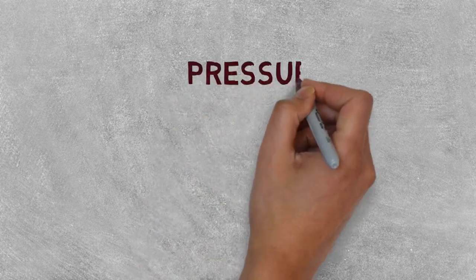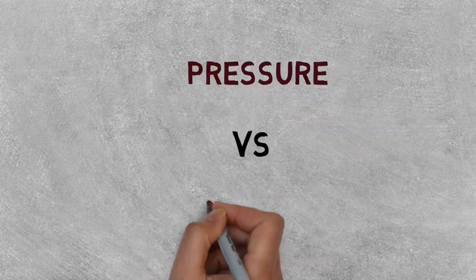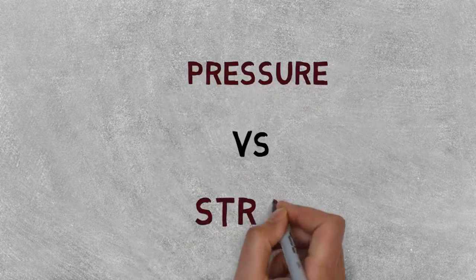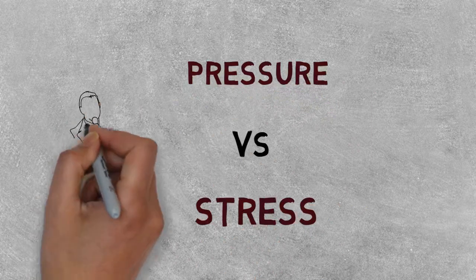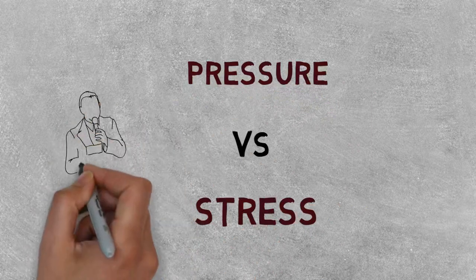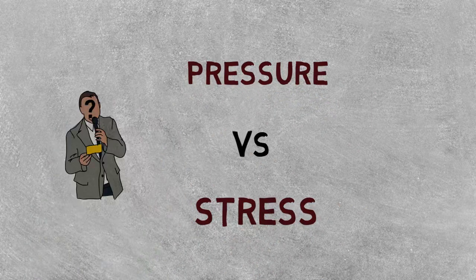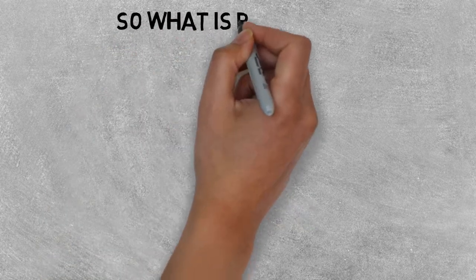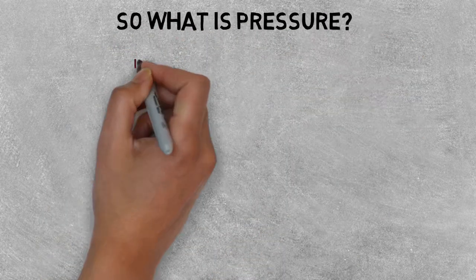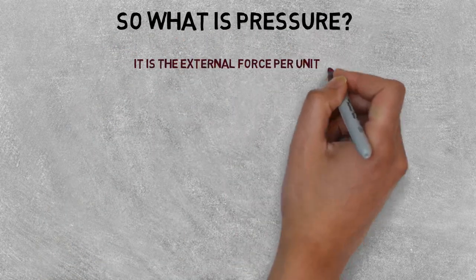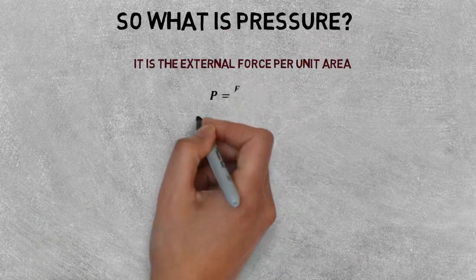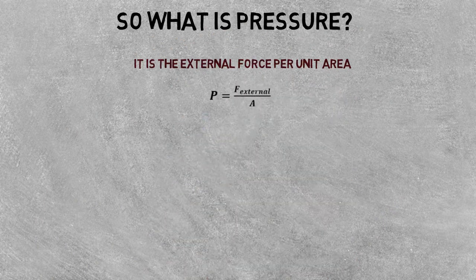Welcome to the video. This video is about pressure versus stress. If there is confusion about the meaning of these two terminologies, this video will help you. So let's begin. What is pressure? Pressure is the external force per unit area — that is, P is equal to F over A — where F is the external force acting perpendicularly on area A.